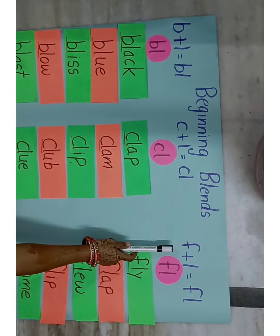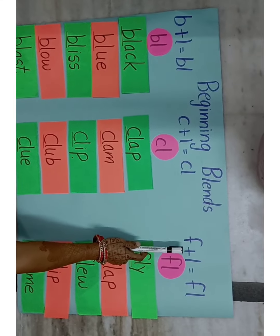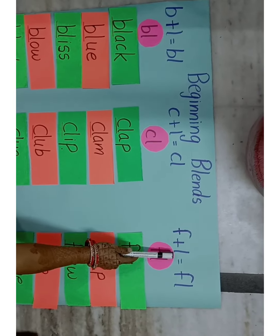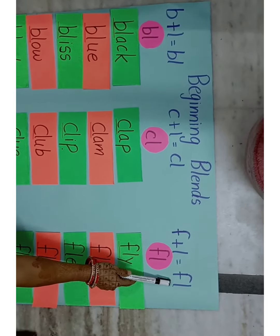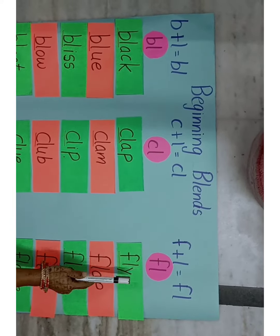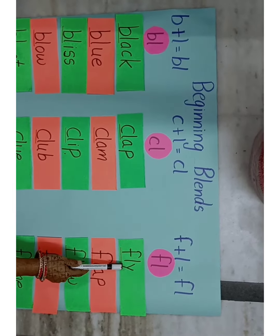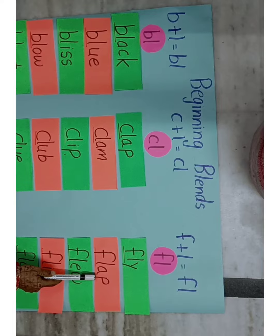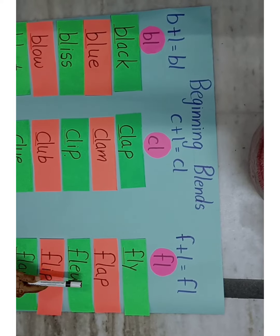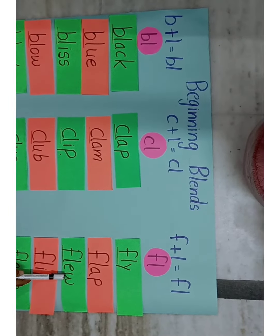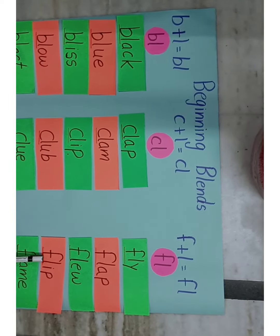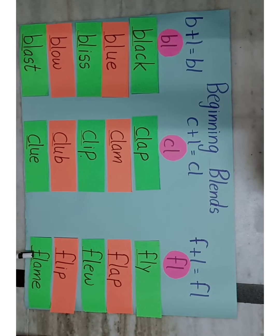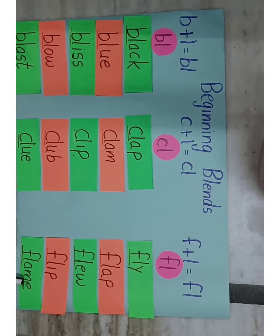Next is F. F sound is F, L sound is L, together they make FL. FL - y - Fly. FL - ab - Flab. FL - u - Flu. FL - ip - Flip. FL - am - Flam.